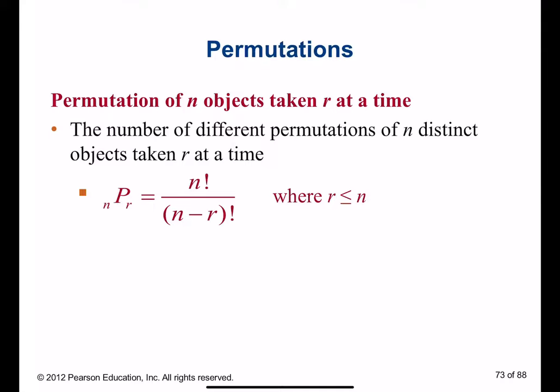So permutation of n objects taken r at a time. Let's assume when presidential elections are coming, what do we do? There is an order, correct? In this election we vote for president, and then the president is choosing vice president and then choosing cabinet of ministers and so on. Everything is going in order.